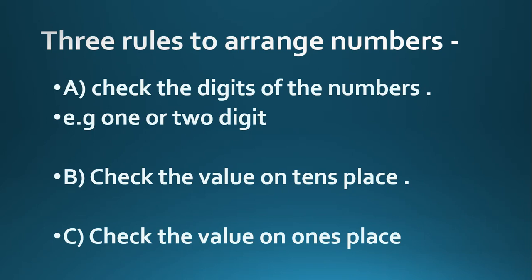The second rule is: check the value on the tens place. Suppose there are two numbers 12 and 22. You will check the value on the tens place — the value on the tens place is 1 and 2. Since 2 is bigger than 1, that means 12 is smaller than 22.